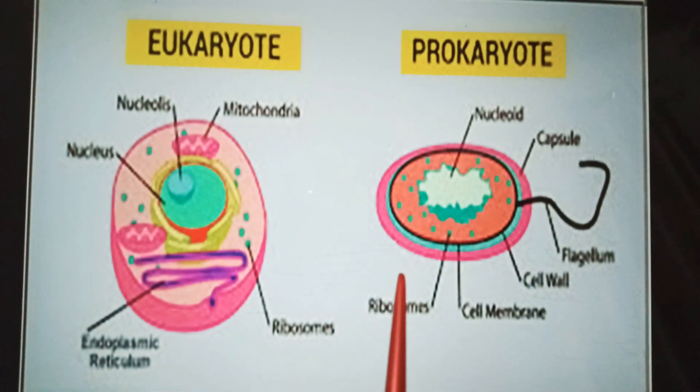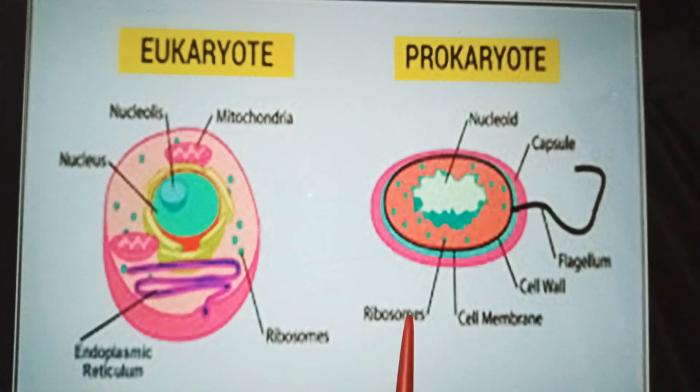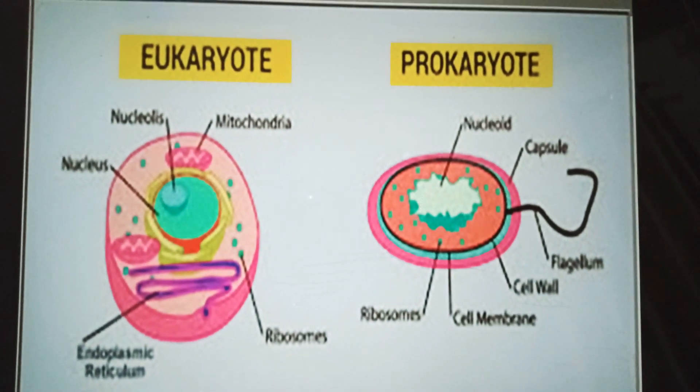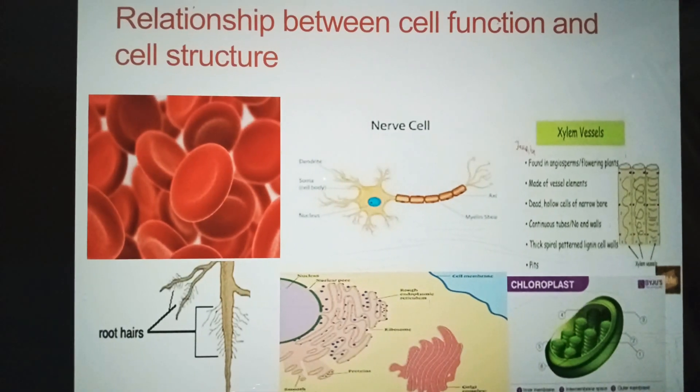All prokaryotic cells have cell wall which is made up of peptidoglycane, a large polymer of amino acids and sugars.